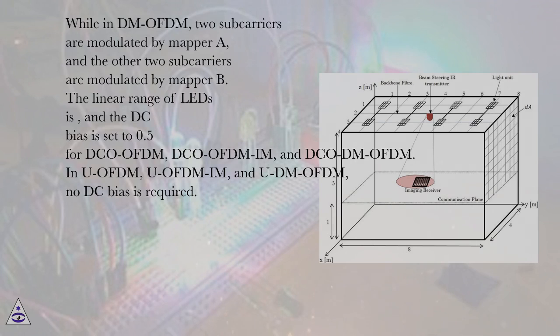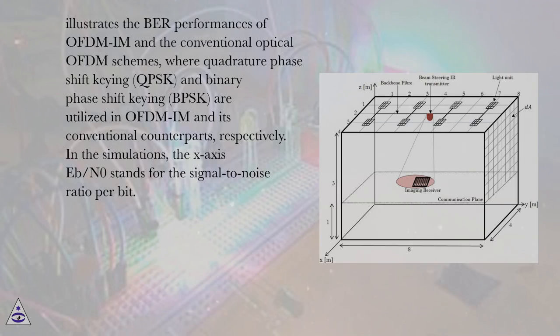In U-OFDM, U-OFDM-IM, and U-DM-OFDM, no DC bias is required. The figure illustrates the BER performances of OFDM-IM and the conventional optical OFDM schemes,